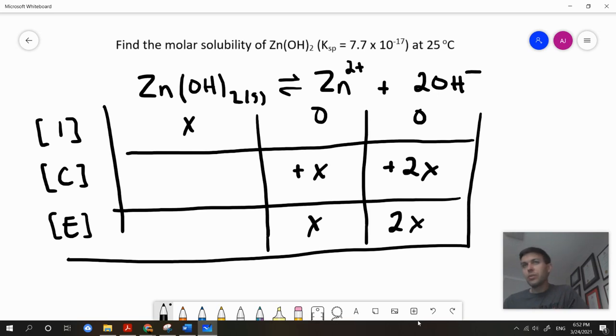Now, as we know, the solid is not going to play a role in our Ksp equation so I'm just going to ignore this part here. We're kind of just setting this up, envisioning that we're dissolving the maximum amount of solute we can and that amount is going to be x expressed in moles per liter.